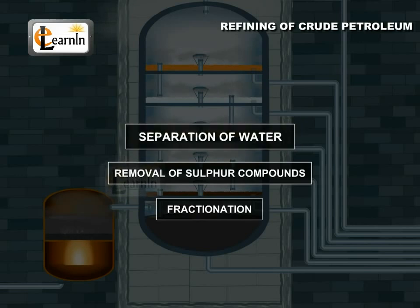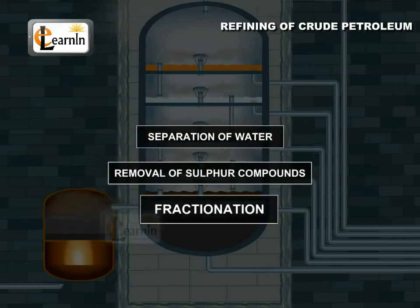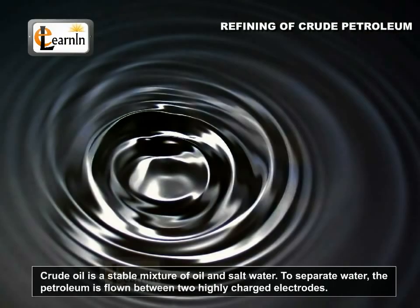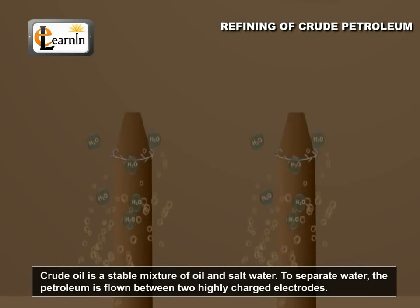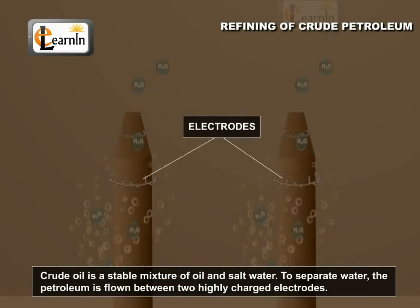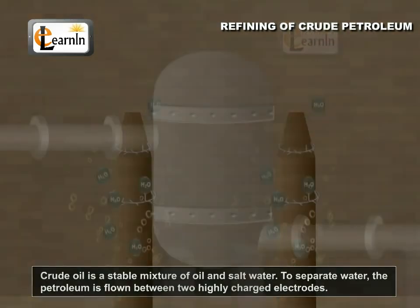Step 1: Separation of water. Crude oil is a stable mixture of oil and salt water. To separate water, the petroleum is flown between two highly charged electrodes. Water drops are formed and are separated out.